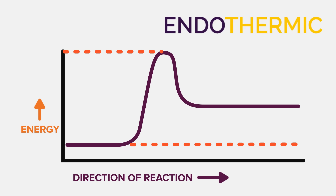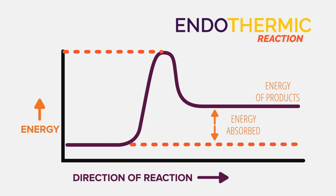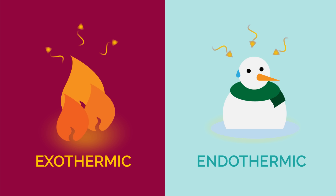Because in endothermic reactions energy is added to the reaction, the energy of the products is higher than the energy of the reactants. And so the energy curve looks like this.